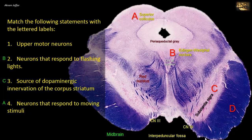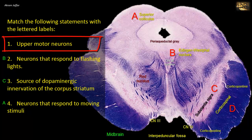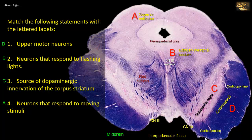D, the cerebral peduncle, is a massive ventrally located fiber bundle that consists of corticopontine, corticospinal, and corticobulbar fibers. The corticopontine fibers occupy the medial and lateral portions of the crus cerebri, while the corticospinal fibers occupy the middle region. The corticospinal fibers are upper motor neurons of the pyramidal pathway. Thus D, corticospinal fibers, match with 1: upper motor neurons.